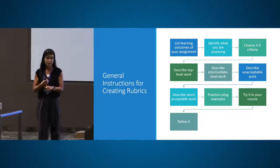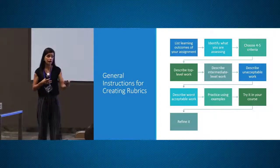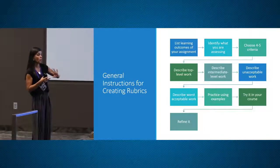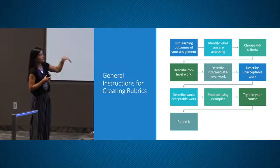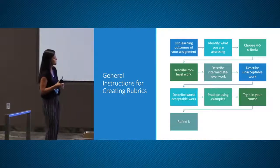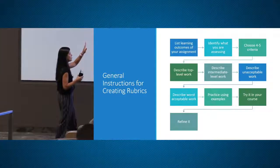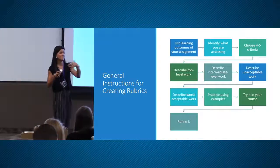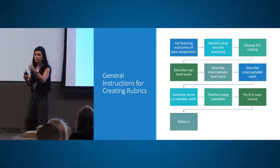Then you're going to identify what you're going to be assessing. Is it a critical thinking skill? Is it information that they have to recall, integrate, apply? You're going to have to think about what skill and knowledge the student needs to have. Then select about four to five criteria — it can be three if you choose. Then describe your top-level work, even if you haven't given the assignment before. You know what a top-level assignment is going to look like.